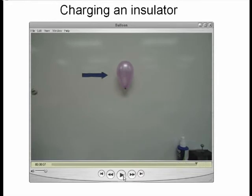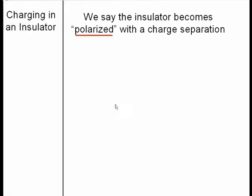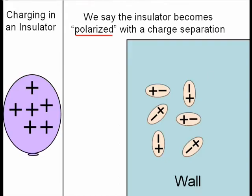Now even though the wall is an insulator, it's acting like it has an opposite charge to the balloon to make it attract. The way we explain how the wall is acting like it has a charge, we say that the insulator becomes polarized with a charge separation. Looking at my animation here,